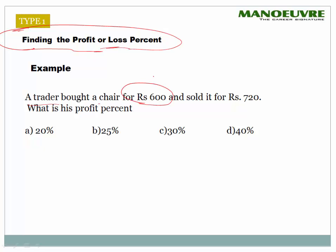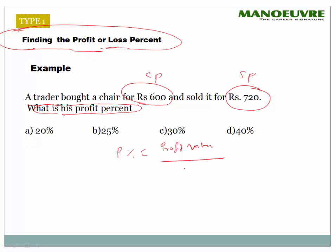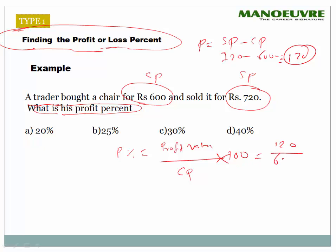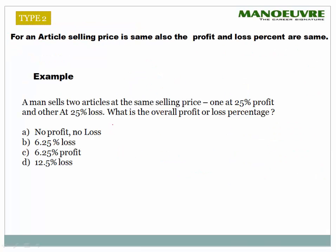A trader bought a chair for 600 rupees — this is the CP — and sold it for 720 rupees, which is the SP. What is the profit percent? Profit percent is profit value divided by cost price into 100. Profit is SP minus CP, so 720 minus 600 equals 120. Then 120 divided by 600 into 100 gives 20% profit.